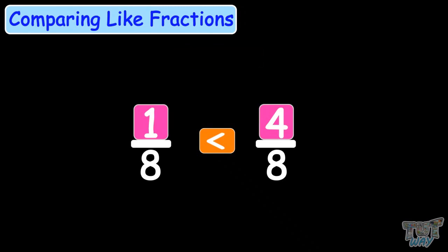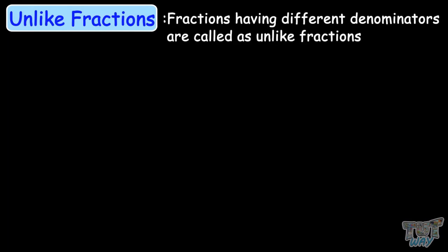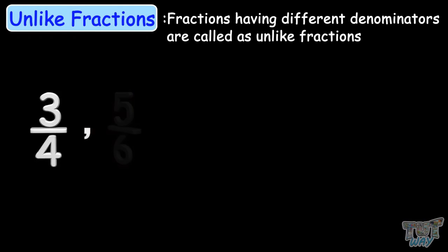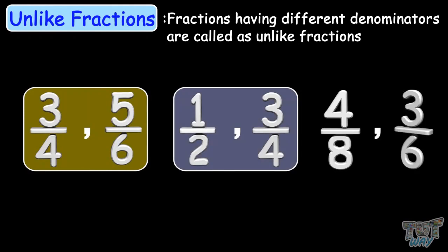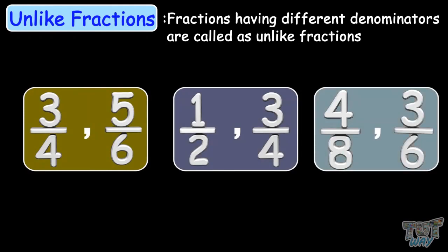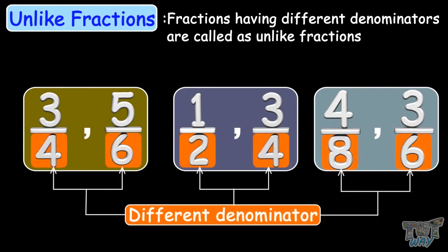Now we will see comparing unlike fractions. Fractions having different denominators are called unlike fractions: 3 by 4 and 5 by 6, 1 by 2 and 3 by 4, 4 by 8 and 3 by 6 — these are examples of pairs of unlike fractions because they have different denominators.